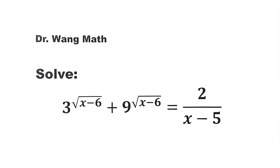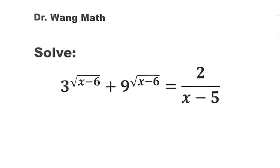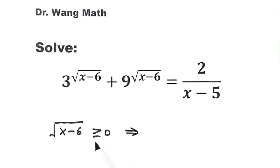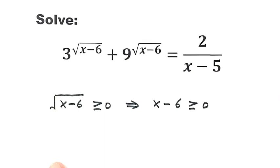We can start from the square root, because the square root is always bigger than or equal to 0. So that means the inside part, x minus 6, is bigger than or equal to 0, which means x is bigger than or equal to 6. We label this as Result 1.